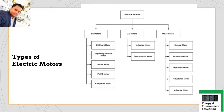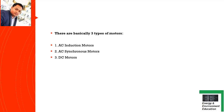There are different types of motors — DC motors, AC motors, and others. DC motors include shunt motors, series motors, and PMDC motors. AC motors include induction motors and synchronous motors. There are also stepper motors, brushless motors, and hysteresis motors. However, for examination purposes, you need to remember the three basic types: AC induction motors, AC synchronous motors, and DC motors, as most exam questions will be based on these three.